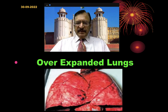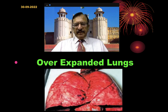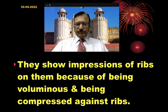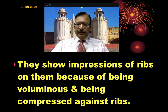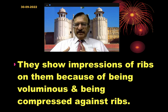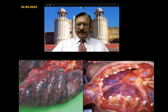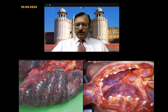The over-expanded lungs, when removed from the body, remain over-expanded and do not collapse. Normally, lungs are in a collapsed form at autopsy, but here they remain over-expanded. They show impressions of the ribs on them because of being voluminous and being compressed against the ribs — they are hyper-inflated and pressed on the inner surface of the ribs, making markings and impressions on them. The left picture characteristically shows rib markings, and in the right picture you can see the lungs meeting in the middle, hyper-inflated.